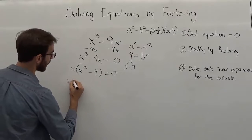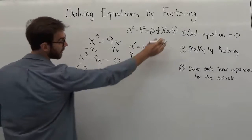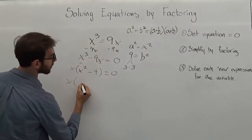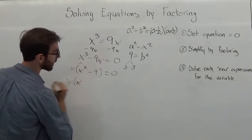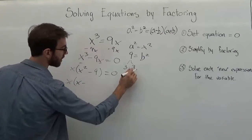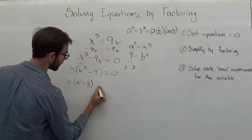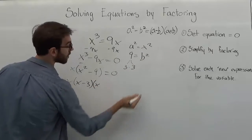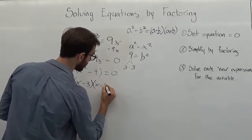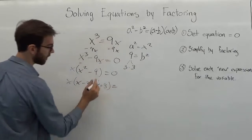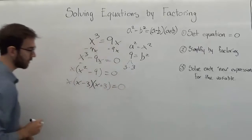We can just say that x is equal to, again using this, our a, which is x, minus our b, which is 3, times again our a, which is x, plus our b, which is 3. And don't forget to set that equal to 0 again.